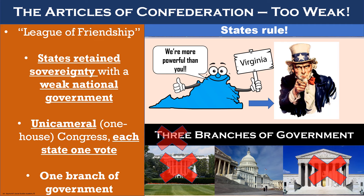So, what could this government do? It could declare war and make treaties. It also created a unicameral, or one-house, legislature — so it had the power to create laws, but there were no governmental institutions or branches to enforce these laws or even judge them.